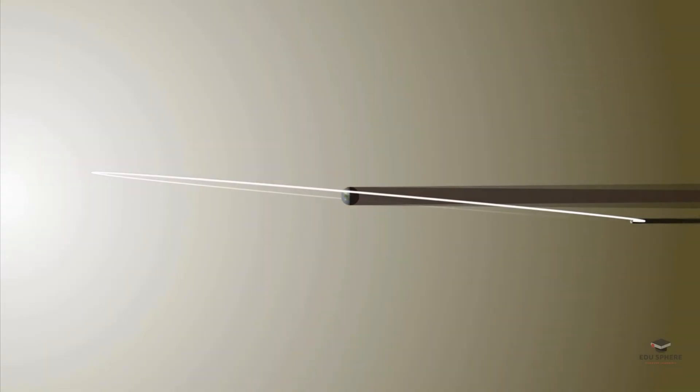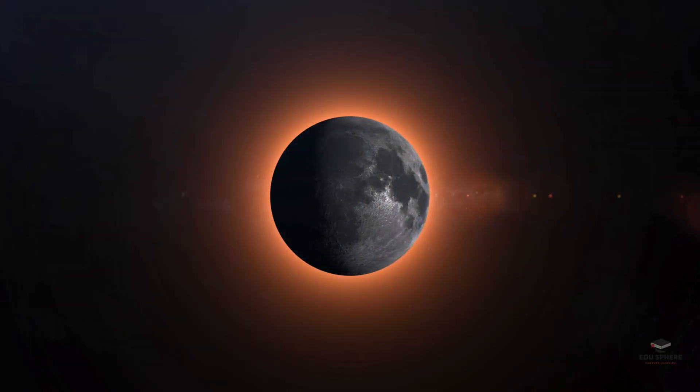During a total lunar eclipse, earth positions itself directly between the moon and the sun, blocking direct sunlight from reaching the moon. In this alignment, the only light that touches the moon comes through the edges of earth's atmosphere.